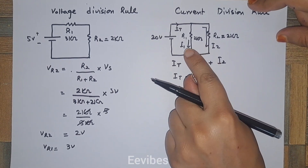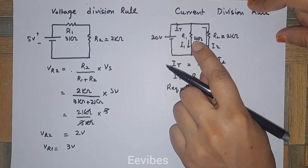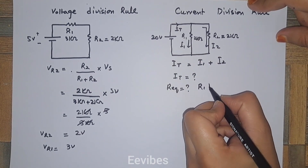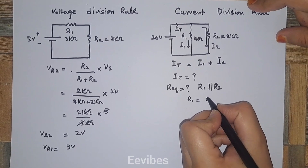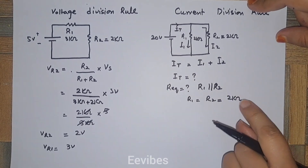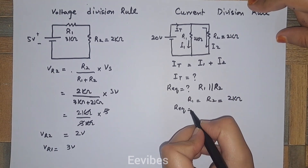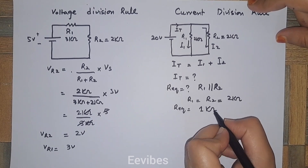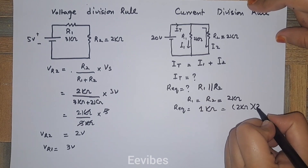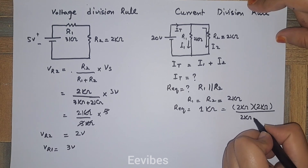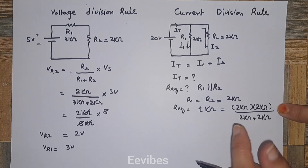To find the total current IT, we need to find the total or equivalent resistance. R1 and R2 are connected in parallel, and since both are equal in magnitude at 2 kilo-ohms, their equivalent will be half their magnitude, which equals 1 kilo-ohm. You can also apply the formula: 2k times 2k divided by 2k plus 2k, giving 4k divided by 4, which equals 1 kilo-ohm.